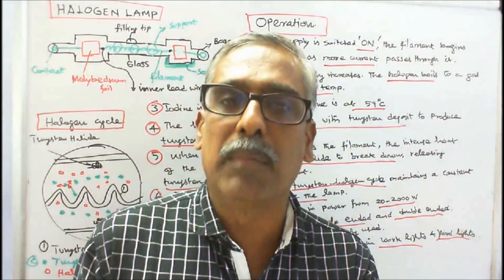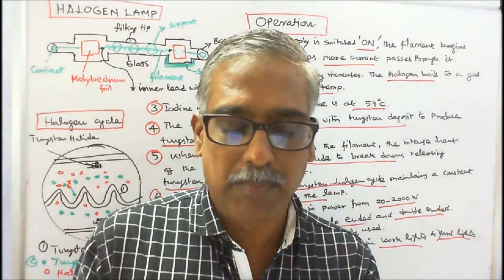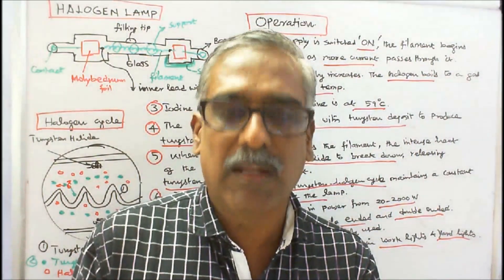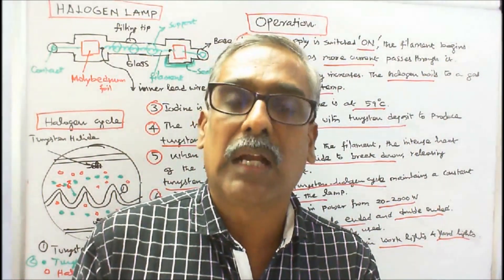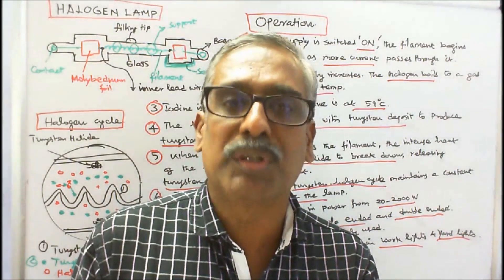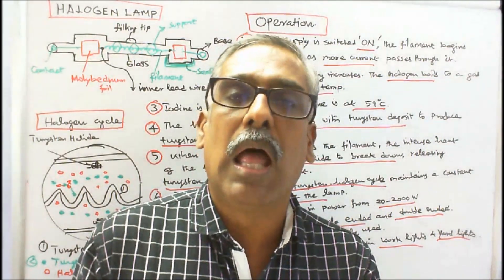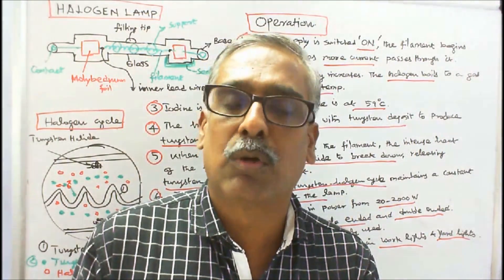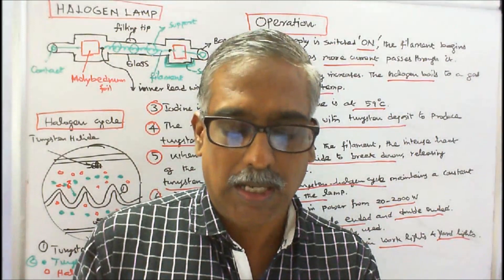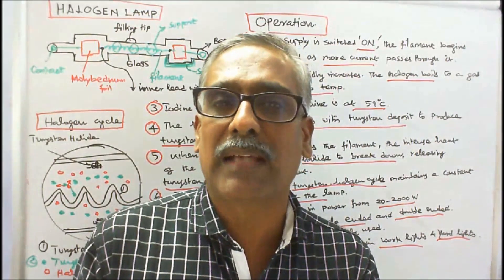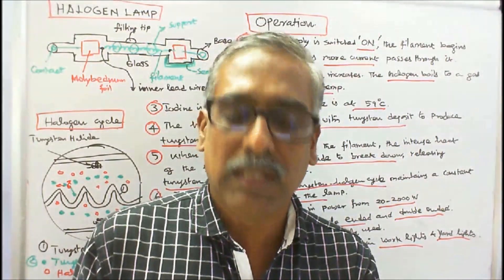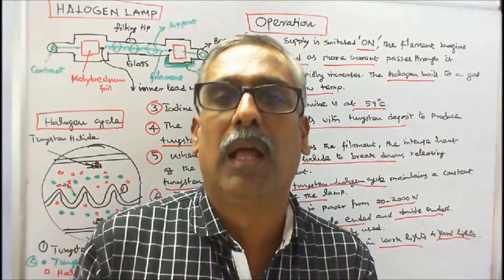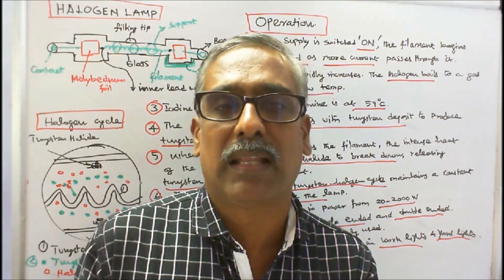Applications of halogen lamps: (1) Halogen lamps have an instant-on ability, unlike mercury vapor or high-pressure sodium lamps, making them ideal for security lamps activated by motion sensors. (2) They are used as portable work lights and auto headlights. (3) As home interior lighting. (4) In commercial exterior lighting. (5) Halogen lamps are used in television and film production. With this, I conclude my lecture. Thanks for listening.